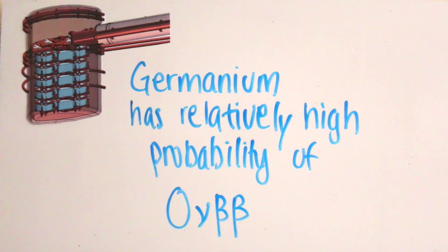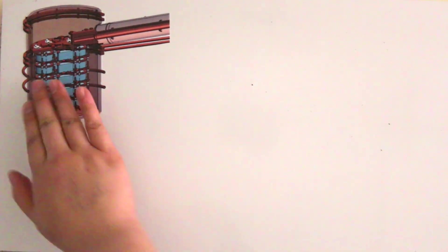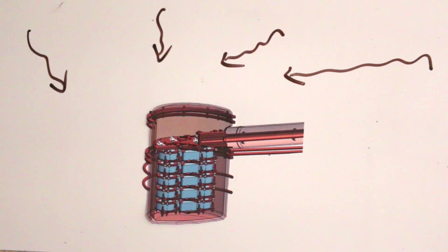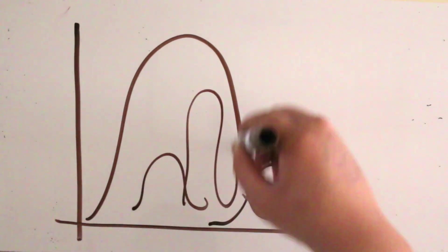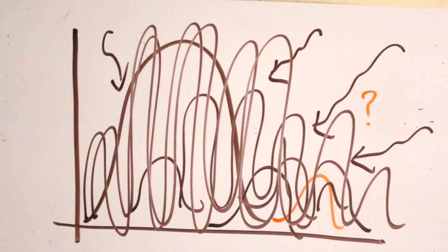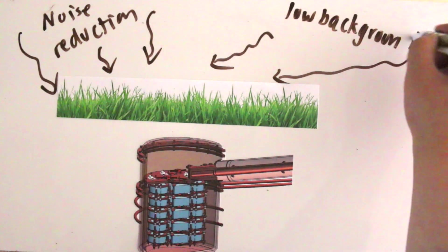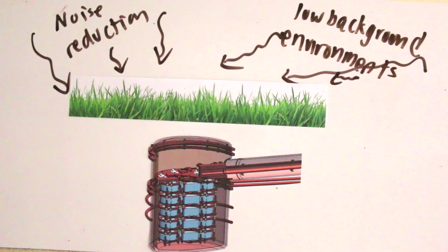which has a relatively high probability of decaying double beta. To prevent cosmic radiation from interfering with our readings by showing up as their own peaks, in which an electron peak could easily be lost and gone unnoticed, the detector is also kept underground. Noise reduction and low background environments are also challenges that we must face.